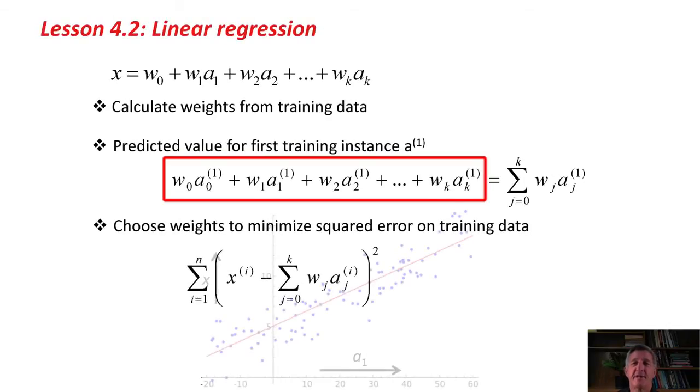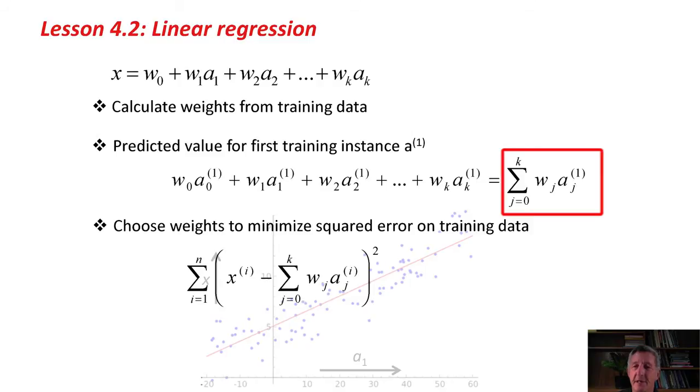We're going to get predicted values for the training instances using this formula here. These w's are just numbers that we've calculated from the training data. Then these things here are the attribute values of the first training instance, a1. That's the 1 at the top here. It means it's the first training instance. This kind of 1, 2, 3 means it's the first, second, and third attributes. We can write this in this neat little sum form here, which looks a little bit better.